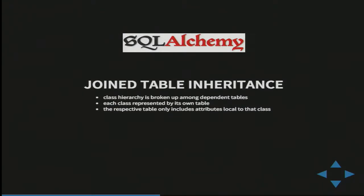Join table inheritance is another nice feature in SQLAlchemy that we use in COTI. It means that the class hierarchy — the inheritance hierarchy — is broken up among dependent tables. Each class is represented by its own table, and the respective table only includes attributes that are local to that class.